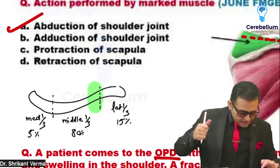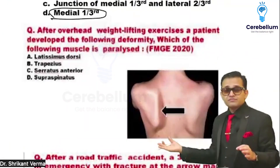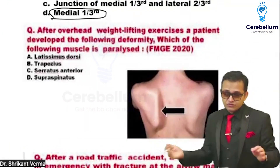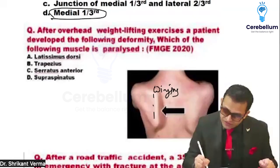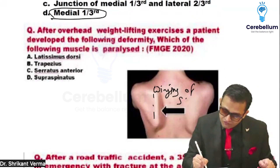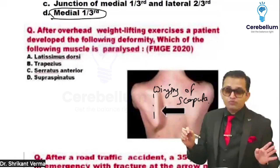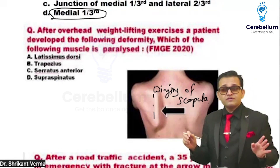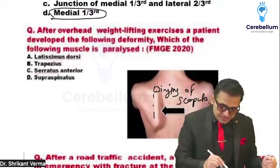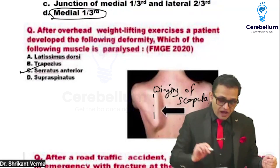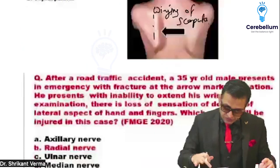This is an easy question — what condition is shown with this elevation? This is winging of the scapula. It occurs due to paralysis of the serratus anterior muscle. I will teach you the muscle, its nerve supply, and the clinical correlation.